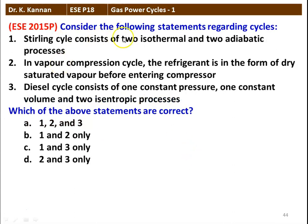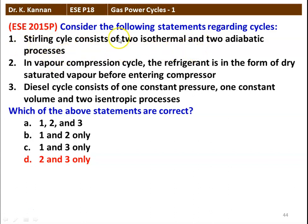Next question from the 2015 question paper: consider the following statements regarding cycles. Statement 1 — Stirling cycle consists of 2 isothermal and 2 adiabatic processes. Statement 2 — in a vapor compression cycle, the refrigerant is in the form of dry saturated vapor before entering the compressor. Statement 3 — Diesel cycle consists of 1 constant pressure, 1 constant volume, and 2 isentropic processes. The correct answer is option D, statements 2 and 3. Statement 1 is wrong because 2 isothermal and 2 adiabatic processes describe the Carnot cycle, not the Stirling cycle.